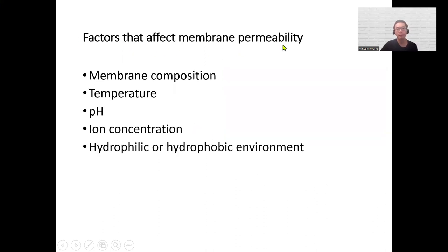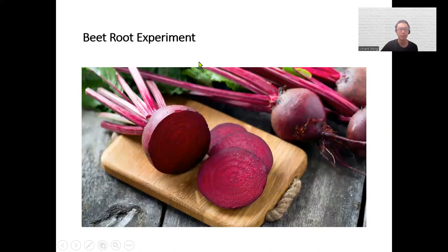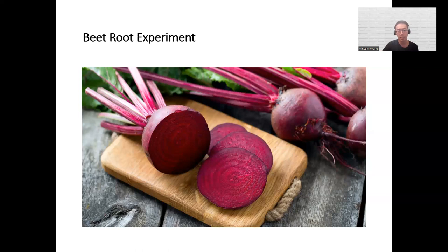There are different factors that affect membrane permeability. We already talked about membrane composition — more or less saturated fat, more or less cholesterol changes the fluidity. But temperature, pH, ion concentration, and the type of environment also have an effect on membrane permeability. Your first lab is the beetroot experiment, where you'll examine how temperature affects the membrane permeability of beetroot. Professor Haeri will take over for the lab. It's done online, so you fill out a lab report and submit it.